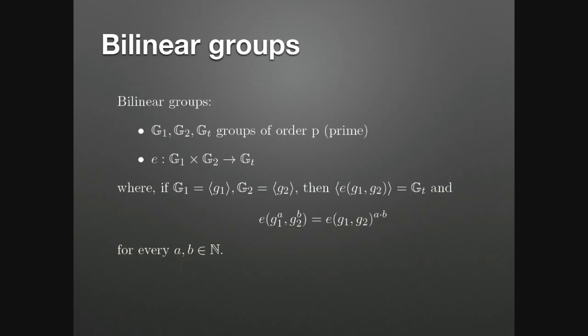A bilinear group consists of three groups of prime order. The first two are called the source groups, and the third is called the target group. We also have a bilinear map with the property that, roughly speaking, allows us to compute a multiplication in the exponent, with the result being an element in GT. This is useful, for example, to build signature schemes defined over G1 and G2, where the map is used to check the verification equation done in GT.